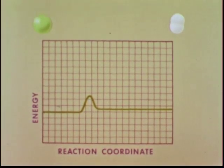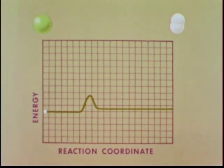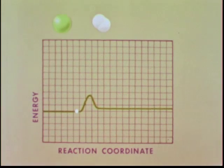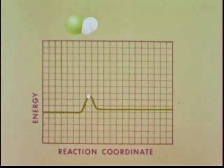We follow the progress of this typical reaction by a point on the curve. Changes in position as the particles approach each other are represented along the reaction coordinate. As the particles come closer, the potential energy increases.